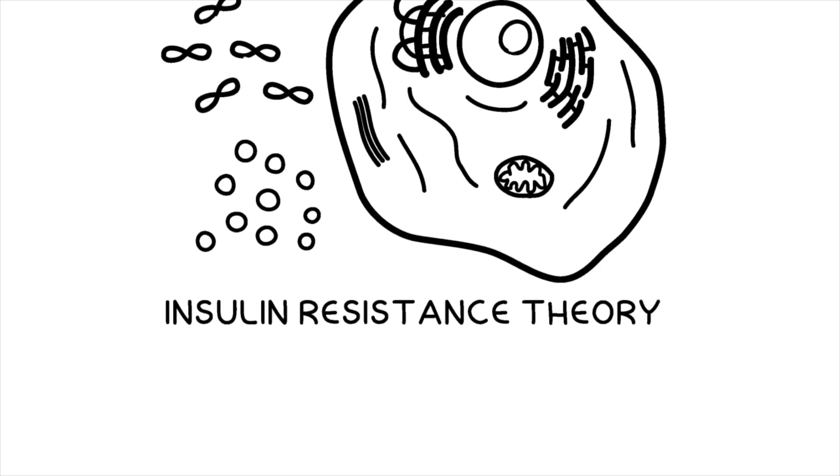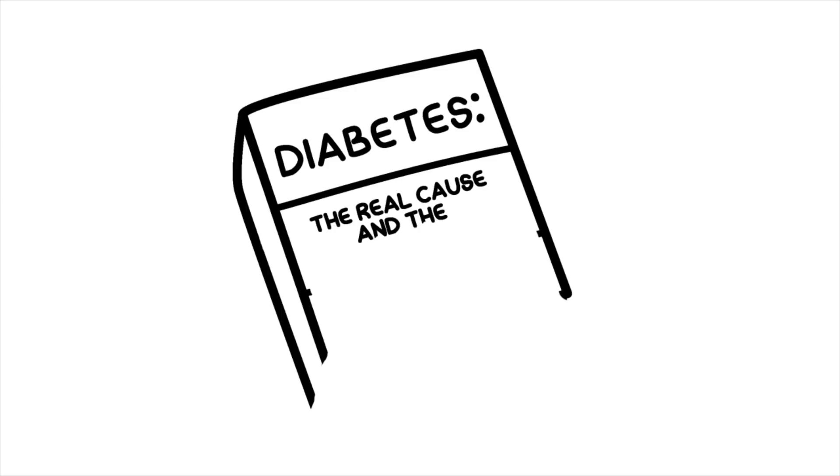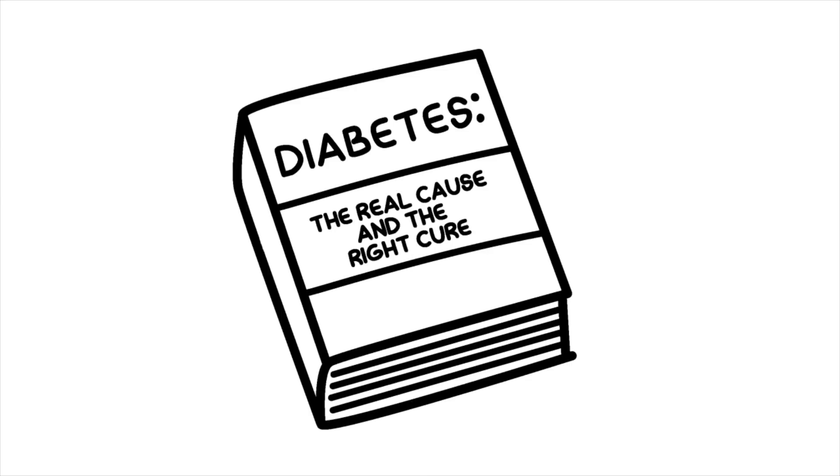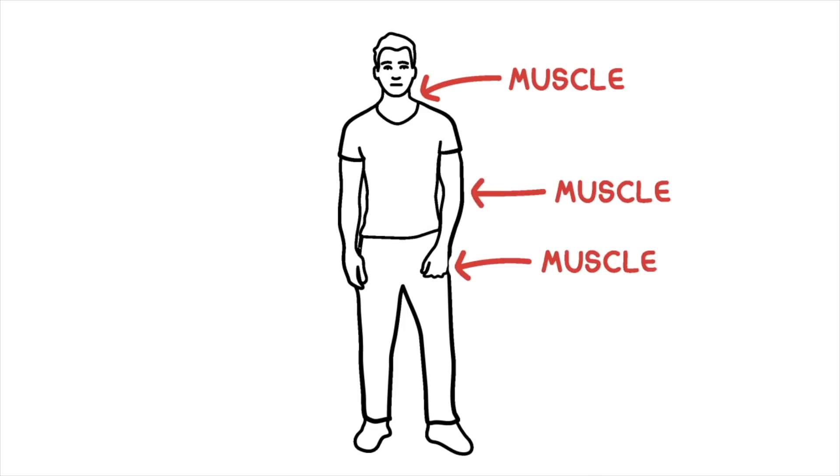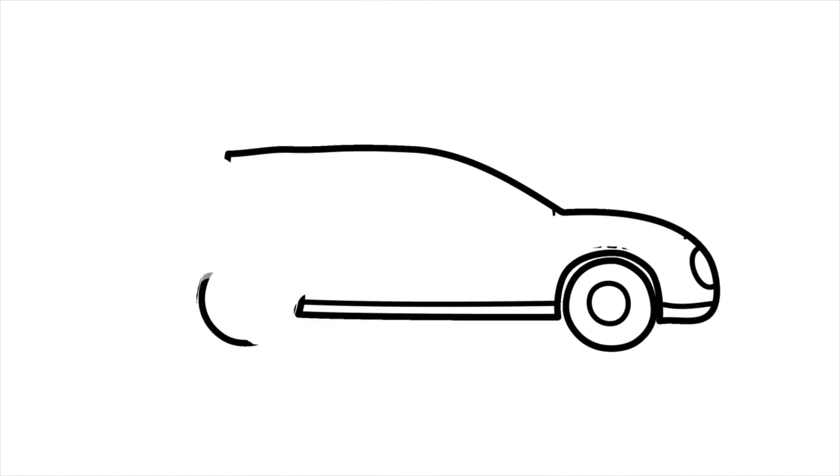Secondly, rather than believing in insulin resistance, here is what I think is happening that causes blood sugar to rise and eventually cause diabetes. In your body, the most important users of glucose to extract energy are your muscle cells. The average adult is made of 36 to 42% of skeletal muscle as percentage of body mass. Muscle cells are like a hybrid car. They can produce ATP from two things.